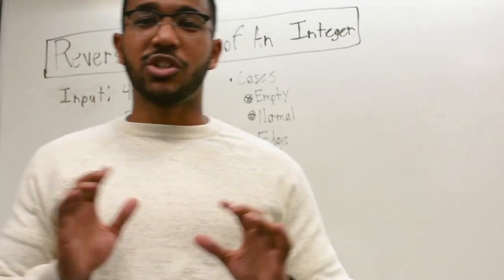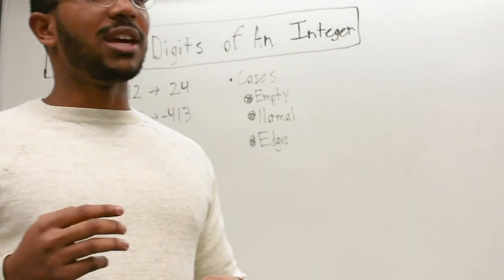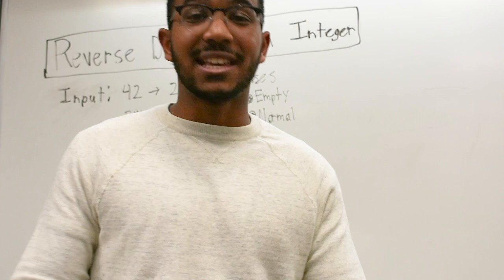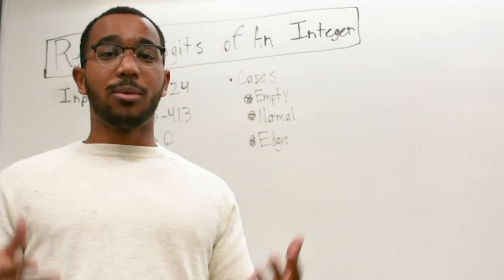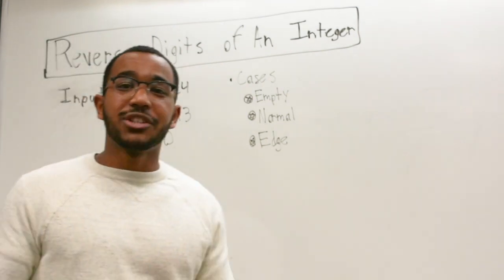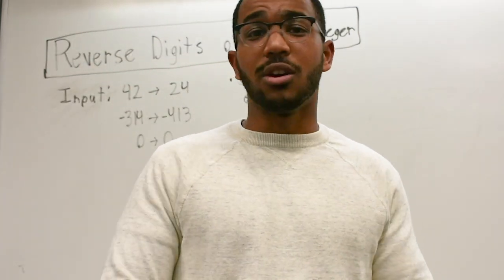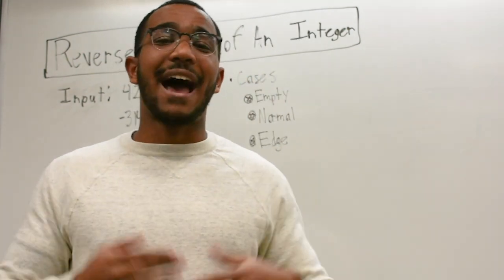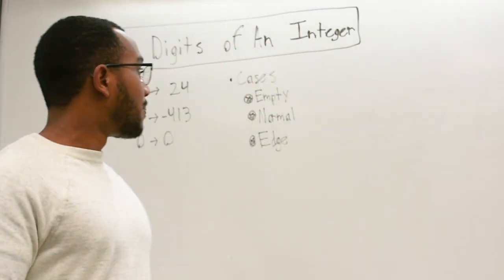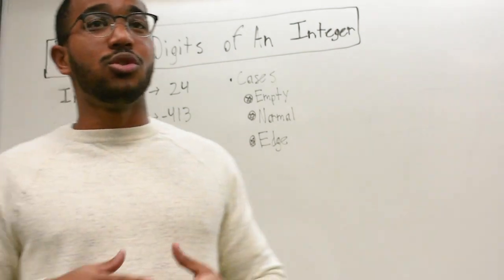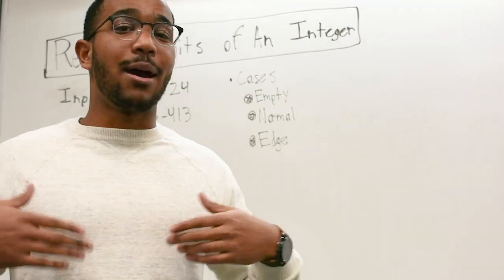So whenever we approach questions like this, we first always need to think of three things. We need to think of three types of cases. So we have our empty cases, we have our normal cases, and we have our edge cases. So our empty cases is what if something is no, what if something is zero, what if something doesn't exist? And also the normal cases, this is the normal stuff, this is what your code should always handle. This is typically the easiest thing to get working.